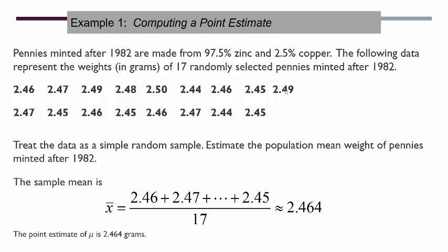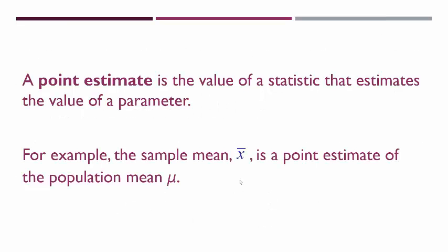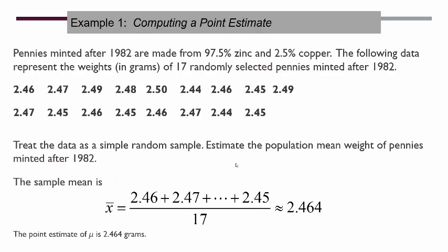If we want to estimate the population mean, we're just going to use x-bar, this point estimate. The sample mean is calculated by adding up all the values and dividing by 17, giving us a sample mean of 2.464 grams. So the point estimate of mu here is 2.464.